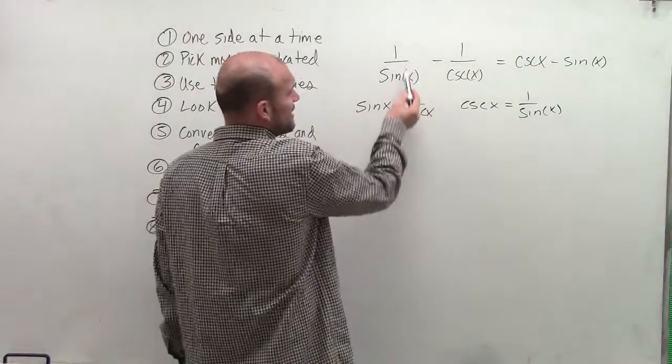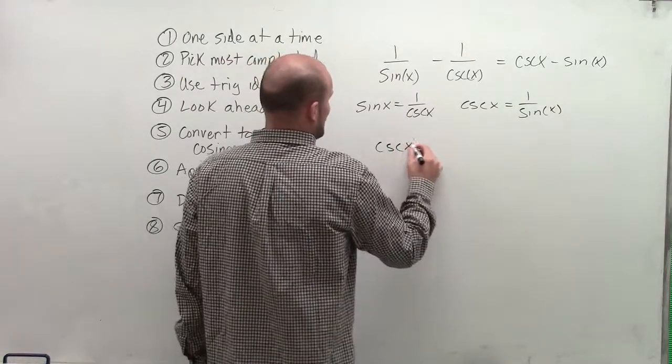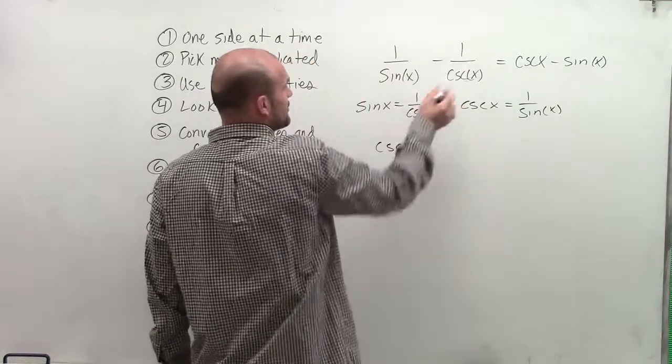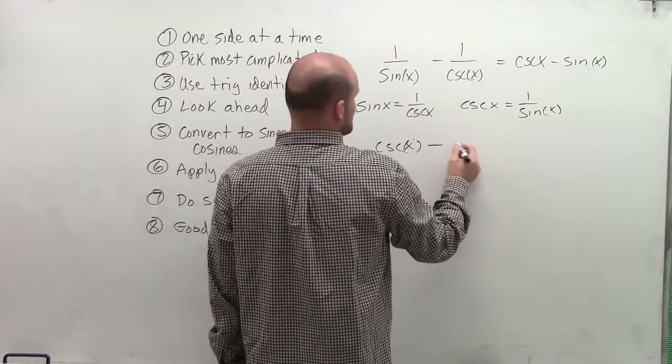So therefore, I can rewrite 1 over sine of x as cosecant of x. And I can rewrite 1 over cosecant of x as sine of x.